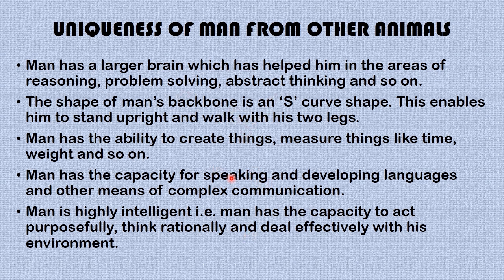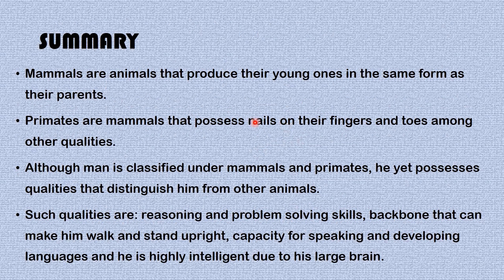These are the ways by which man is unique from other animals. Now for the summary: mammals are animals that produce their young ones in the same form as their parents. Primates are mammals that possess nails on their fingers and toes, among other qualities. Although man is classified under both mammals and primates, he possesses qualities that distinguish him from other animals.